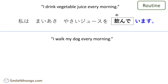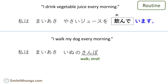Let's say you do one more thing every single morning — walk your dog. 'I walk my dog every morning.' To walk a dog in Japanese, we say 'I do dog's walk.' So: 私は毎朝犬の散歩をしています。 散歩 means walk or stroll. The te-form here is しています。 私は毎朝犬の散歩をしています — I walk my dog every morning. Again, this is a routine, so you have to use the te-form imasu expression.